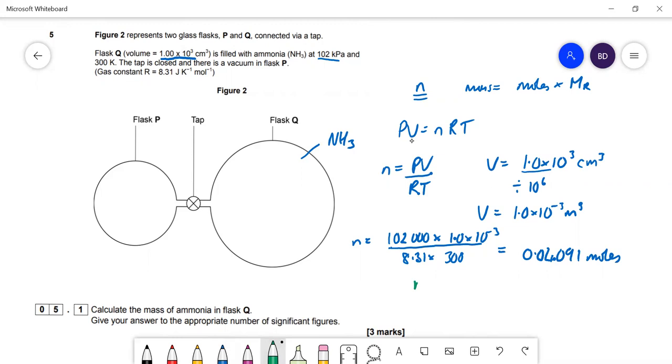Mass equals moles times MR. So 0.04091 times 17, which is the MR of ammonia, gives us 0.6955 grams. Give it to three significant figures: 0.696 grams of ammonia. We're going to need this number for the next bit.